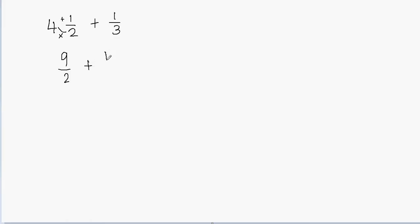Now I have plus 1 third here. You see that I have different denominators, and when you have different denominators you cannot add the fractions — you need to find the common denominator. So I'll multiply each fraction with the other's denominator. I'll multiply this fraction by 3 over 3. It's important to multiply both the numerator and the denominator because multiplying by 3 over 3 is just multiplying by 1, so you're not changing the value of the fraction.